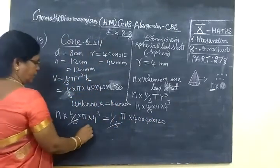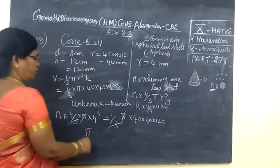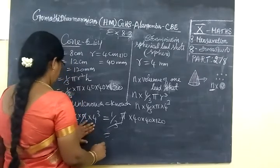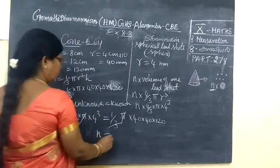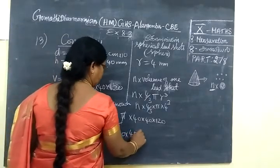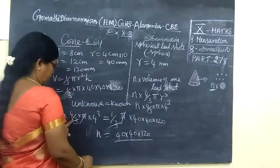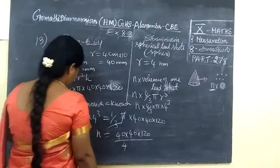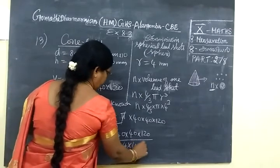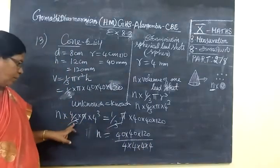So three cancels with three, π cancels with π. Then n equals 40 times 40 times 120 divided by 4 times r³. With r = 4, we have 4³ in the denominator.